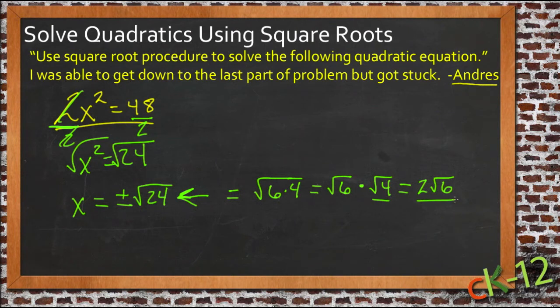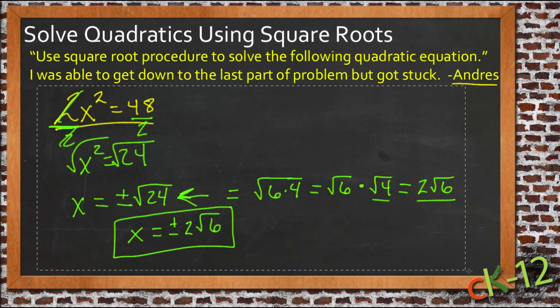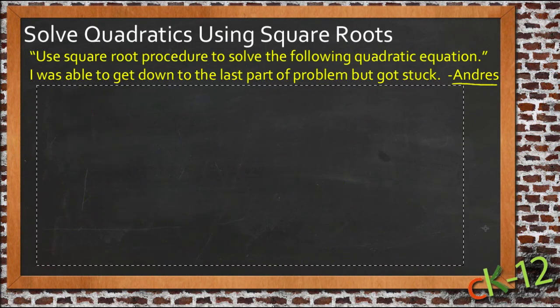So I could rewrite this then. This is the same thing as 2 times the square root of 6. And that, I'm guessing, is probably what he had in his book that didn't look like square root of 24, but that would give his answer as the positive and negative 2 square roots of 6. So I'm guessing that's probably what you needed there, Andres. Let's see if we can do another example here that's similar, just for a little bit of practice.